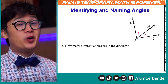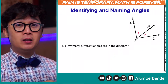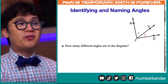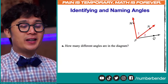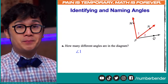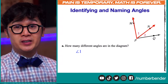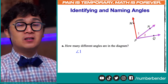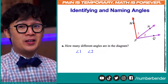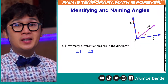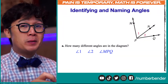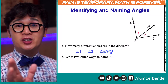Now, what about identifying or naming an angle? Now that we know how to write the proper names, we'll use this figure with multiple angles. The first one we can see is angle 1. We can use angle 1 or angle P, but in this case I'll use angle 1 because there are multiple angles with the same vertex, which is vertex P. Another angle we see is angle 2. And there's also angle MPQ in this diagram, which we can also name as angle QPM.